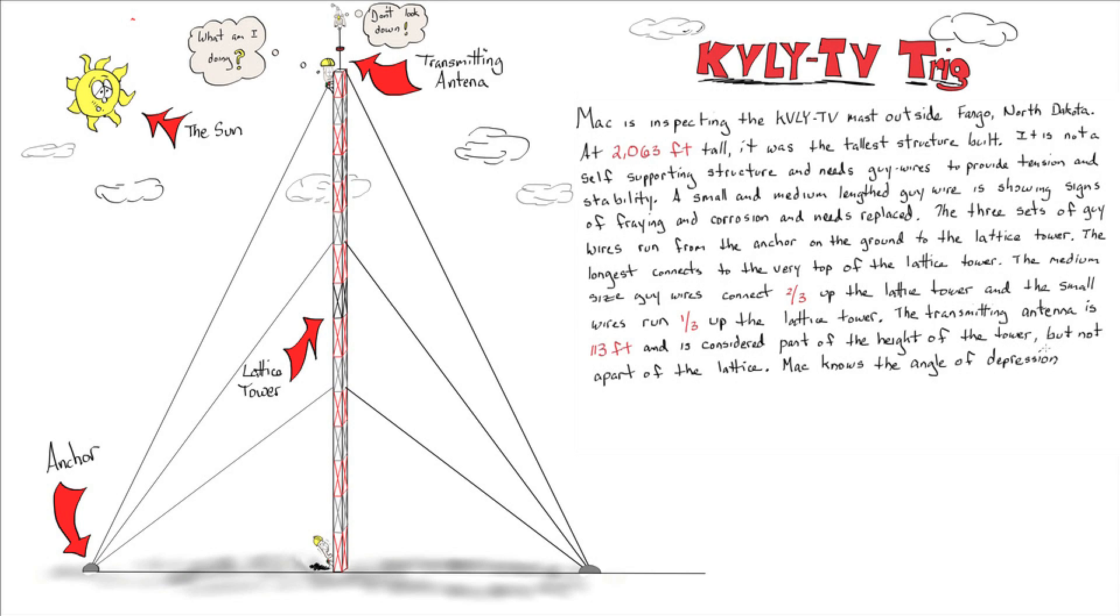Mack knows the angle of depression from the top of the lattice down to the anchor is 70 degrees. Help Mack calculate the length of the small and medium guide wires so he can order new ones to be fabricated.